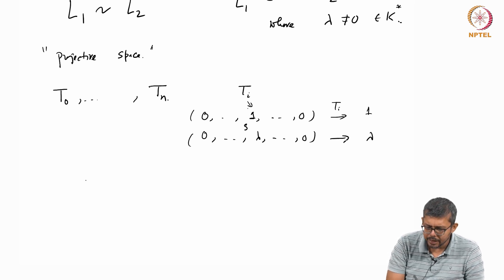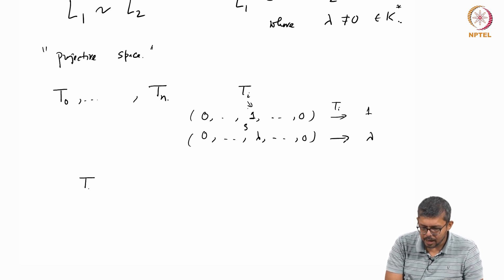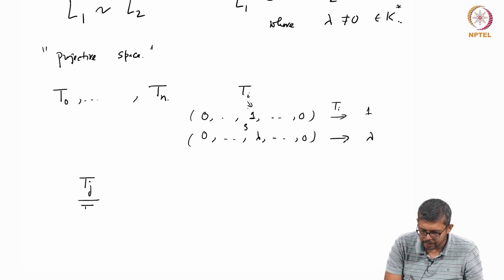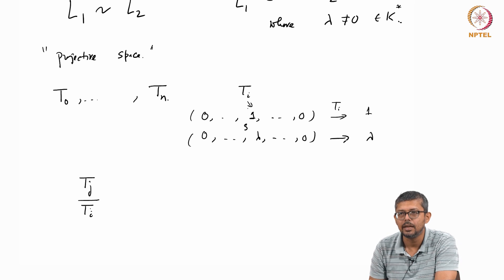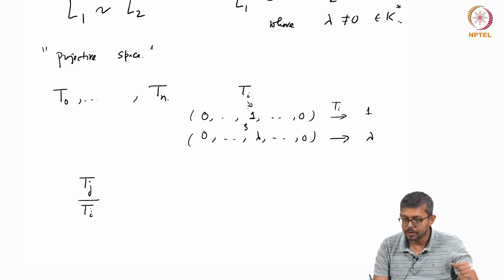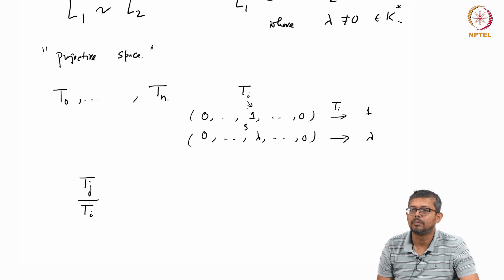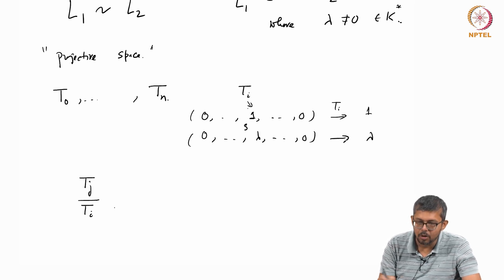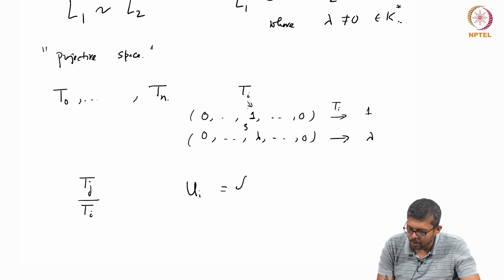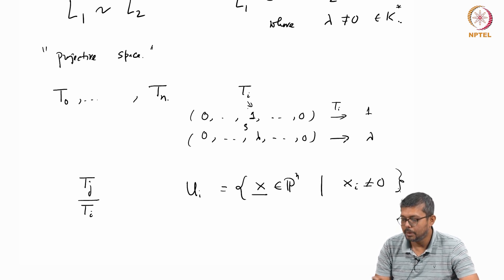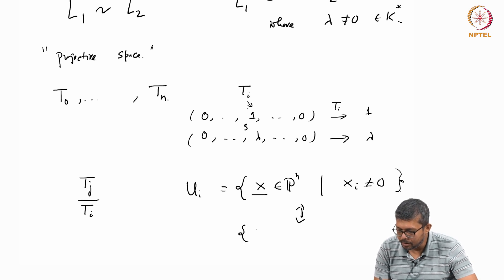But functions like t_j/t_i, of course t_i has to be nonzero, they will form a function. So if I write, suppose U_i is all the points in P^n such that x_i is not 0.